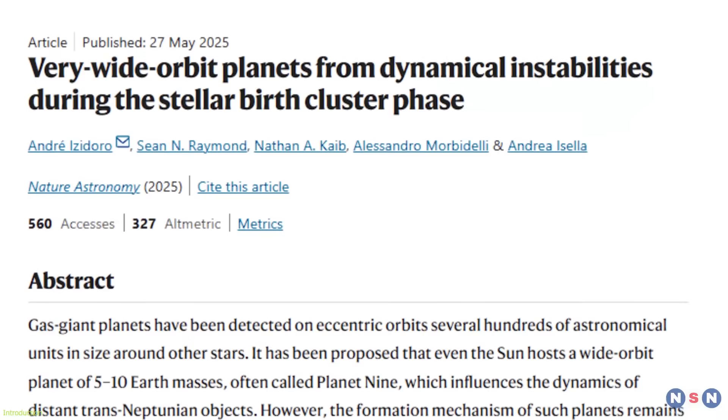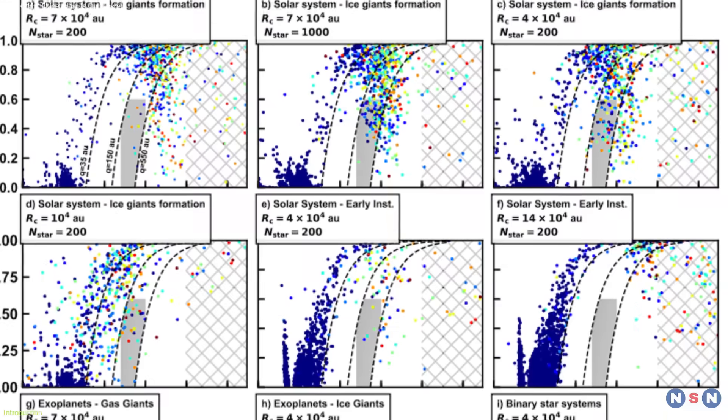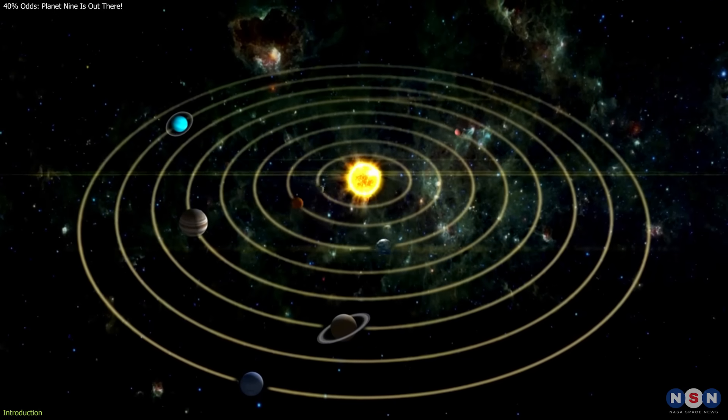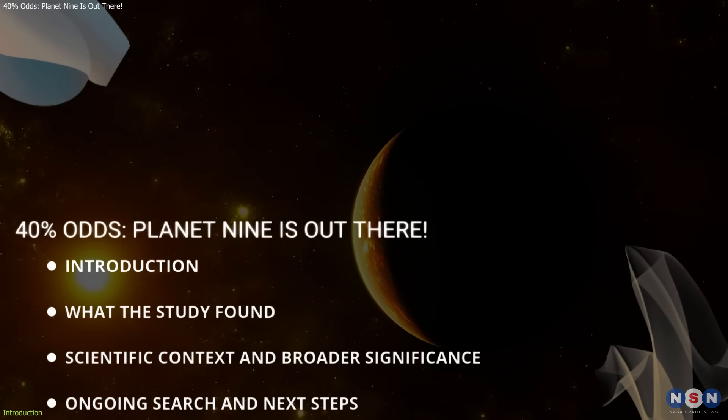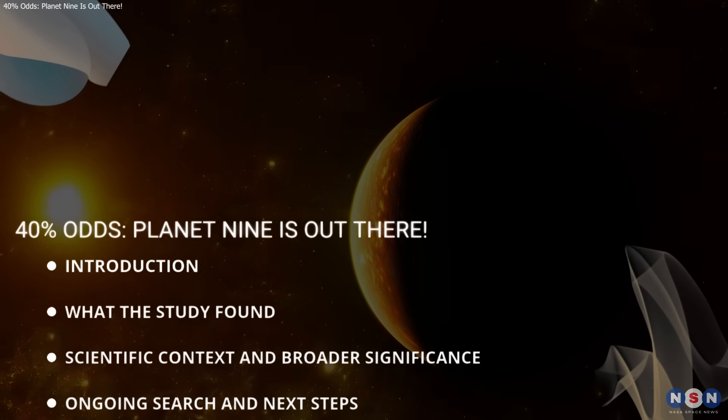Now a new study from Rice University and the Planetary Science Institute may change that. Using thousands of simulations, researchers found that in systems like ours, there's up to a 40% chance a massive planet could have been pushed to a stable, distant orbit, just like the one predicted for Planet 9.